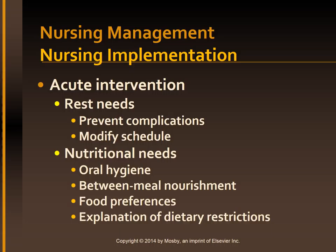Acute interventions: the focus of nursing care for a patient with cirrhosis is on conserving the patient's strength while maintaining muscle strength and tone. When the patient requires complete bed rest, implement measures to prevent pneumonia, thromboembolic problems, and pressure ulcers. Modify the activity and rest schedule according to signs of clinical improvement, such as decreasing jaundice or improvement in liver function studies.